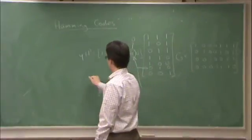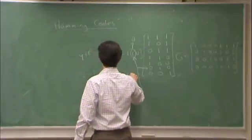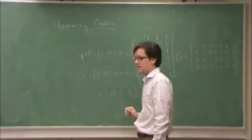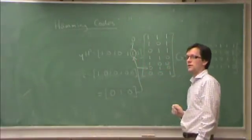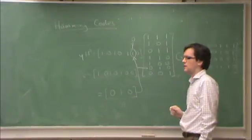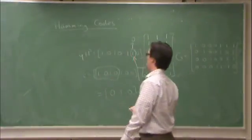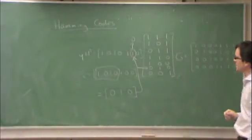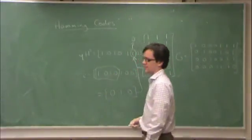And my corrected code word is 1 0 1 0 1 0 0, which is exactly what I sent. And finally, what is the message? 1 0 1 0, the first one is. Yeah, I just extract that. So in fact here, the error was in the parity bits, not the message bits.